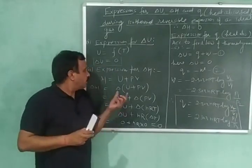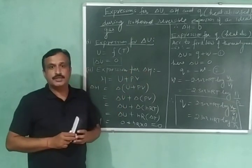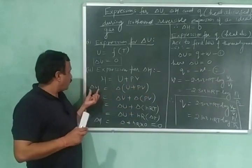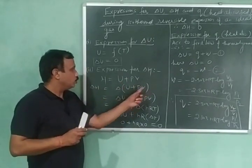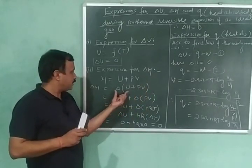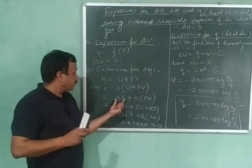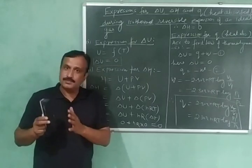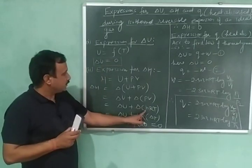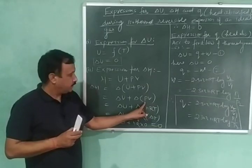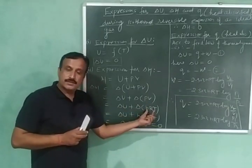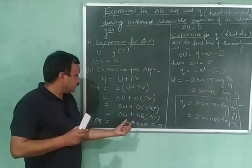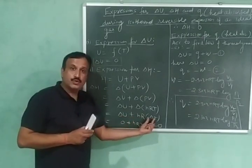Now let us discuss the expression for delta H, the change in enthalpy. We know that enthalpy H is equal to U plus PV, so delta H equals delta U plus delta(PV). For an ideal gas, PV is equal to NRT, so we substitute NRT in place of PV. Since the number of moles N and gas constant R remain constant, this expression becomes delta U plus NR times delta T.